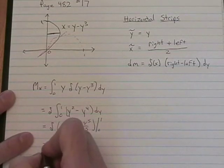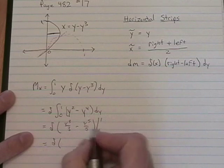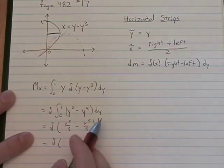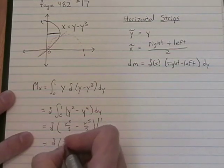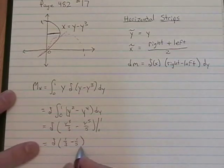Between 0 and 1. Fundamental theorem. When you plug in 0, this stuff's gone. When you plug in 1, you get 1 third minus 1 fifth, which happens to be 2 fifteenths.